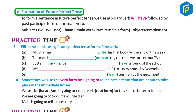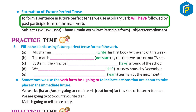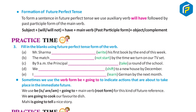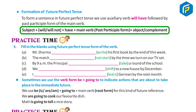Formation of Future Perfect Tense: To form a sentence in future perfect tense, we use the auxiliary verb 'will have' followed by the past participle form of the main verb. Structure: Subject + will/will not + have + main verb (past participle) + object/complement.